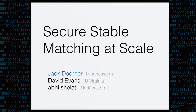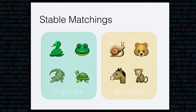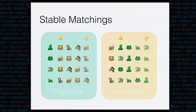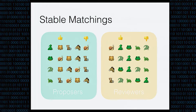We're going to begin by talking about what a stable matching is and why you might want to find one. Suppose you have a bunch of people participating in a matching. We'll call the set of scaly ones the proposers, and the set of fuzzy ones the reviewers. Each member of each set has a list of ratings over all members of the other set. For instance, snake likes bear a lot better than monkey, and monkey better than horse, who he likes better than snail. And horse likes frog the best, followed by snake, crocodile, and turtle.